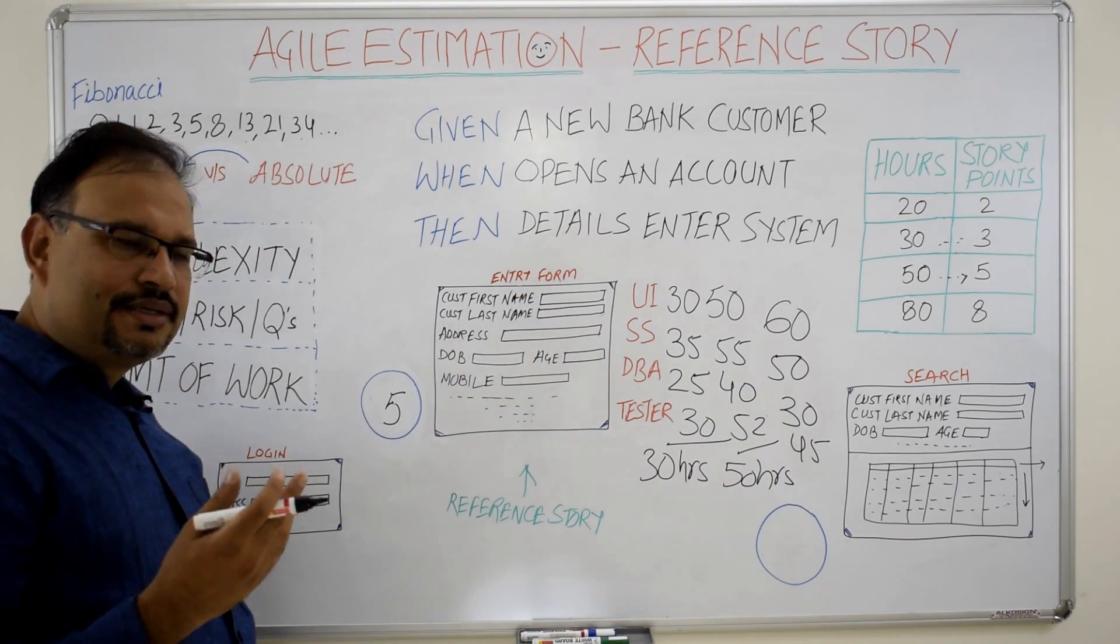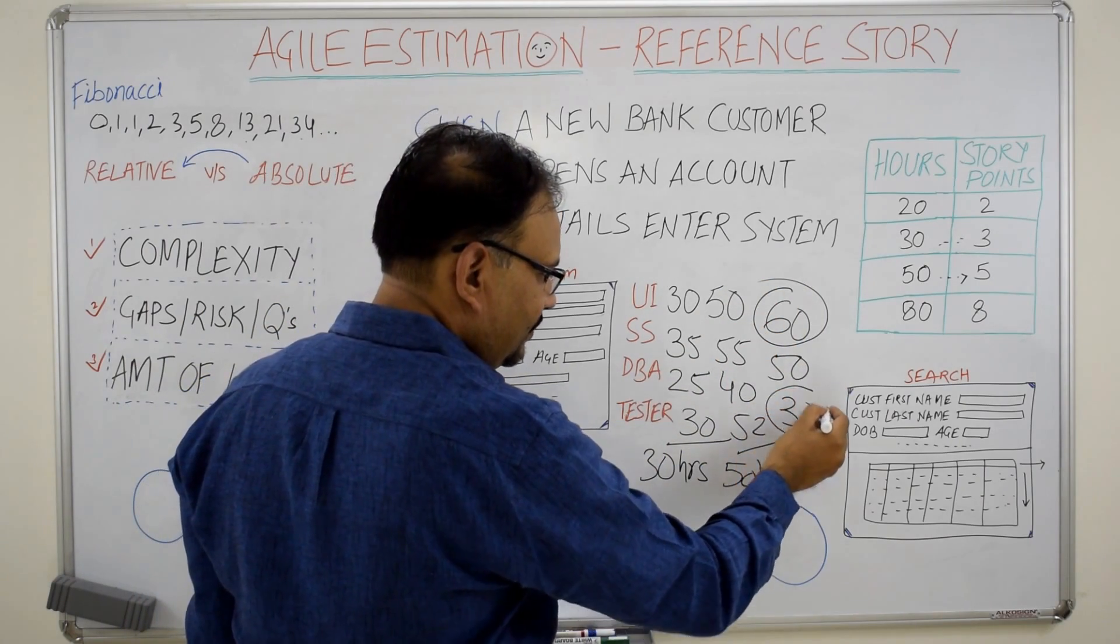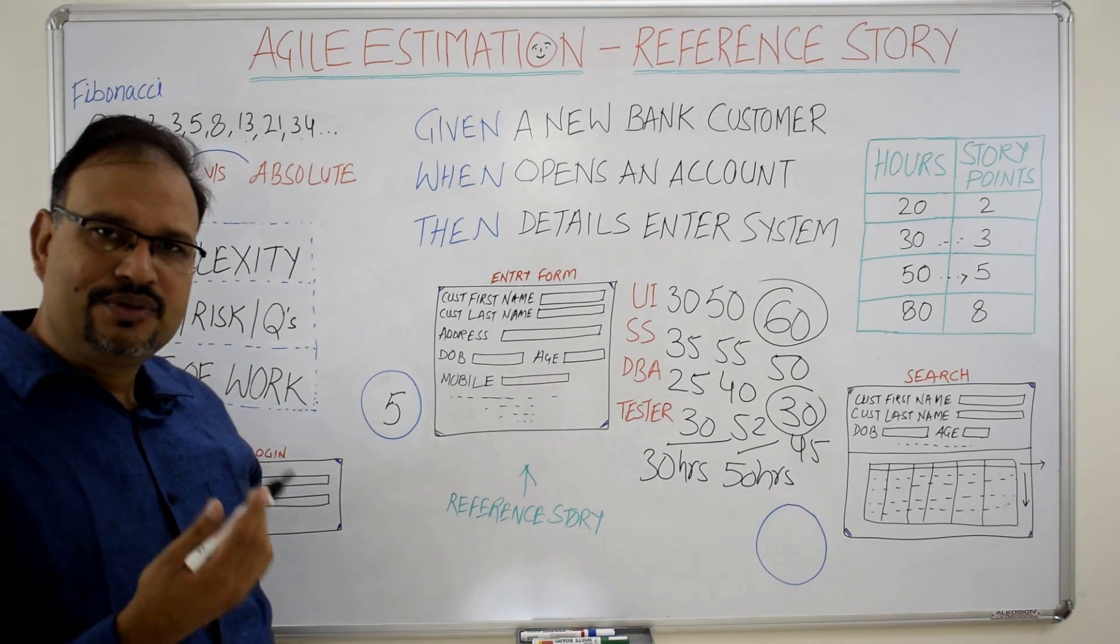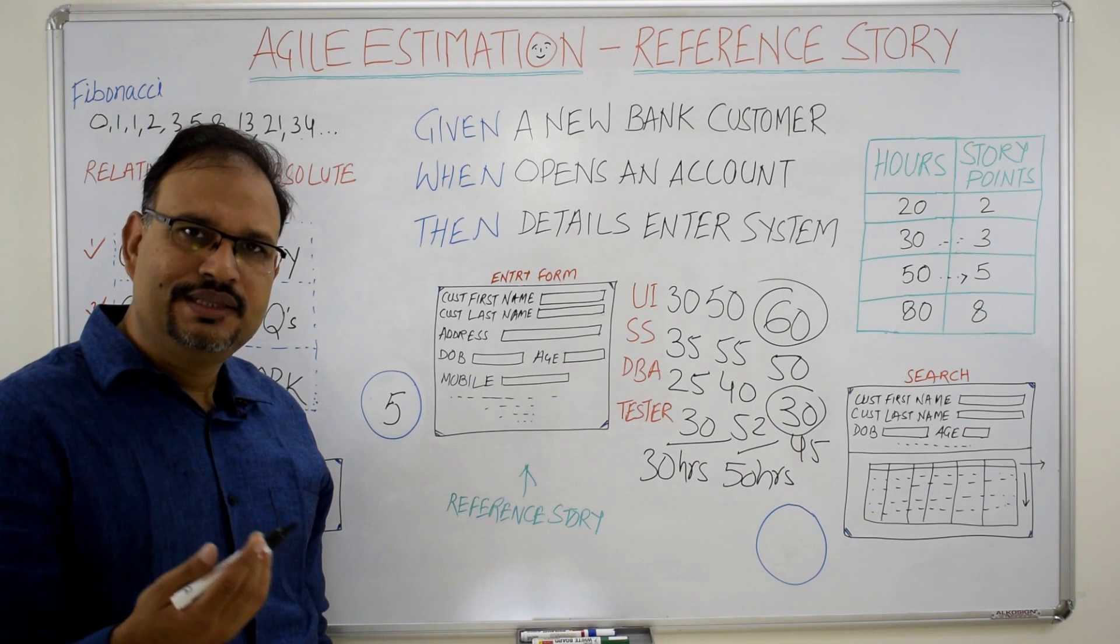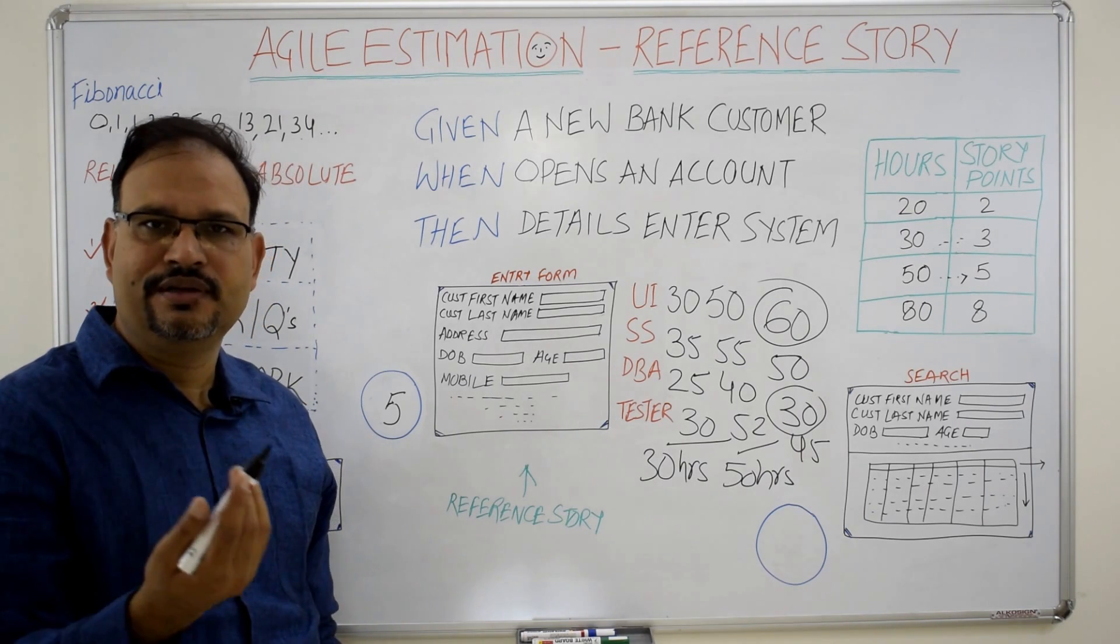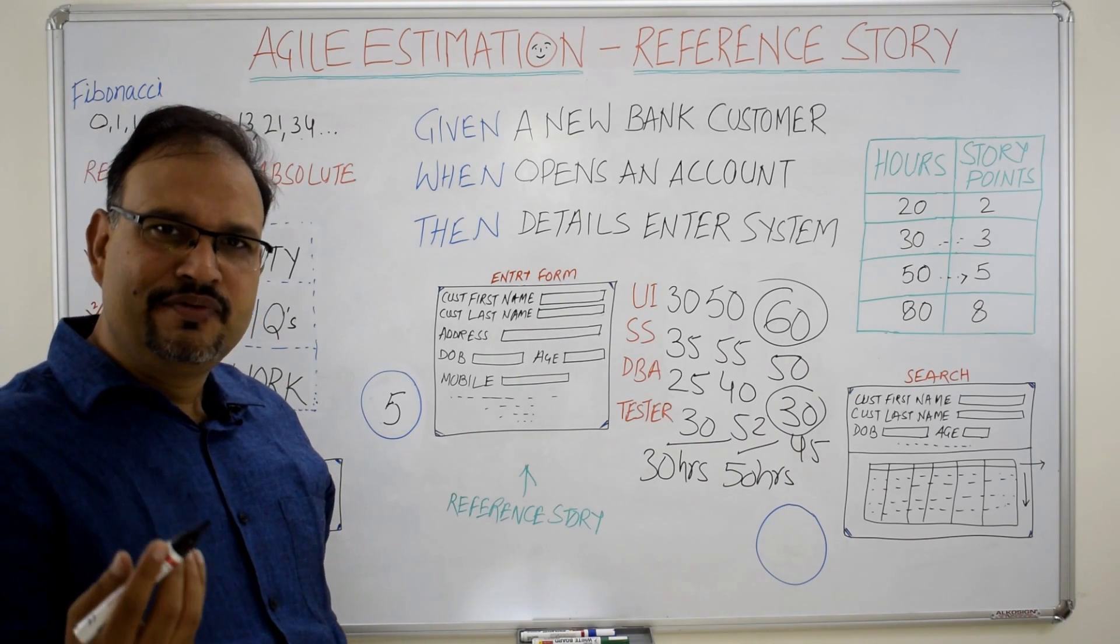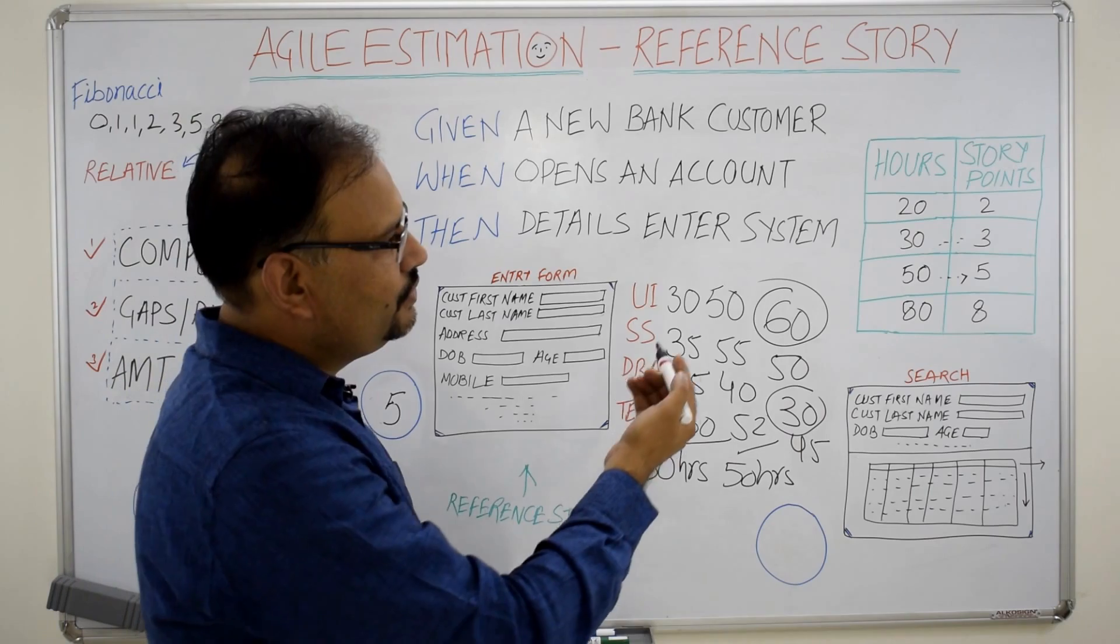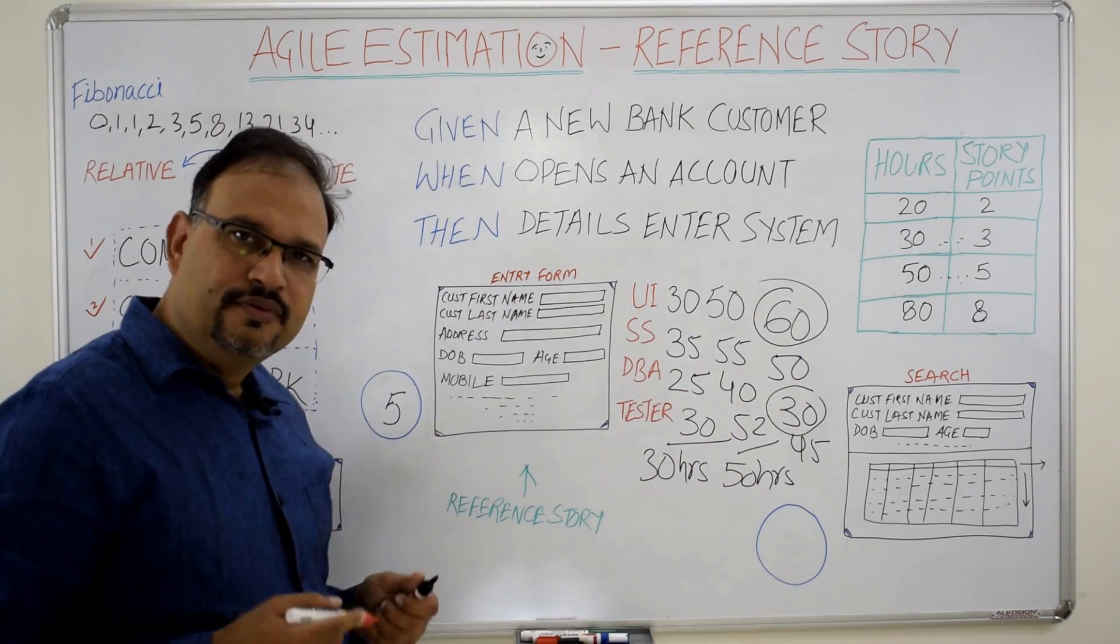Now there are clearly two outliers, one is 60, another is 30. The scrum master is going to talk to these guys, why do they think it is going to take 60 or 30. So they will explain their positions, there will be another round of brainstorming between the team and they will agree some consensus being made between them for an estimate. That estimate can be taken up to this story to decide the story point for the reference story.